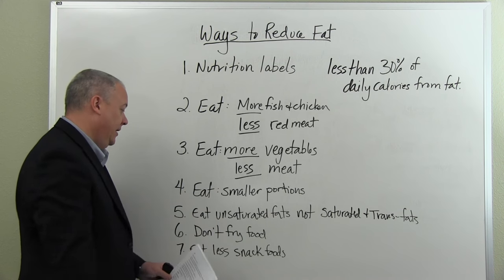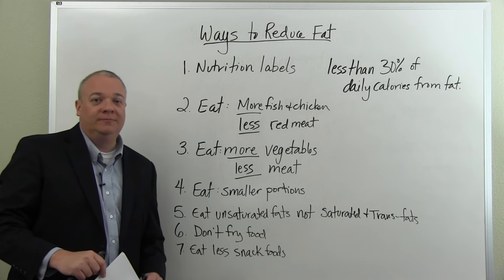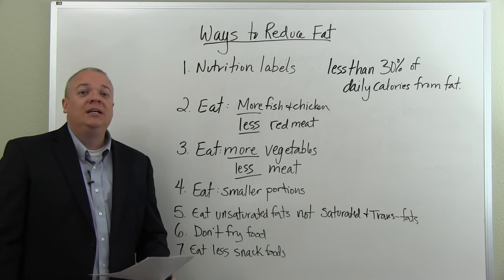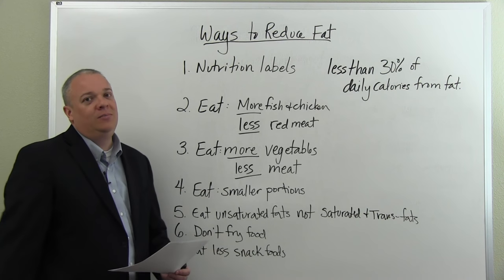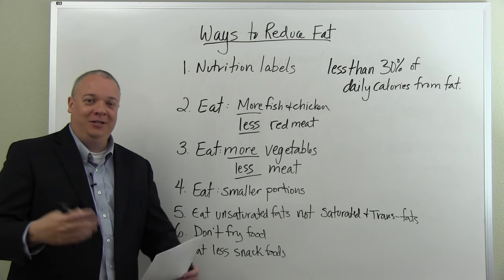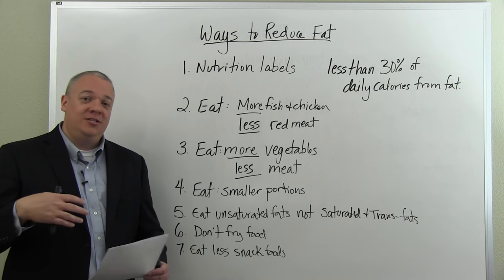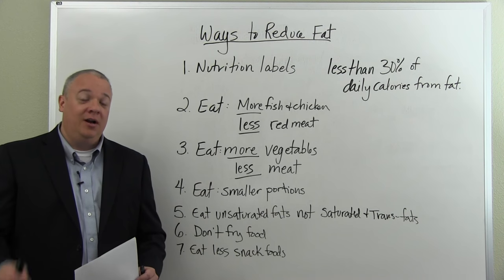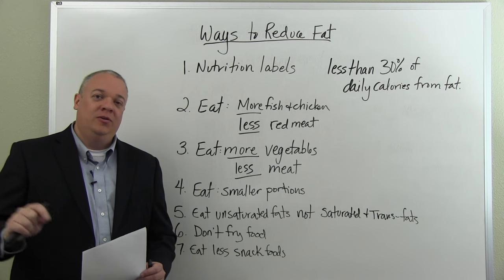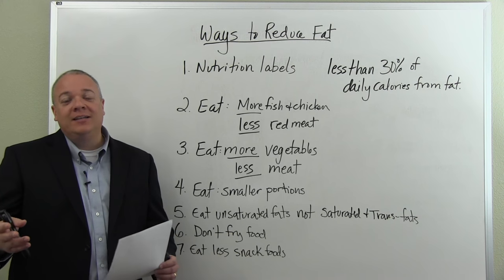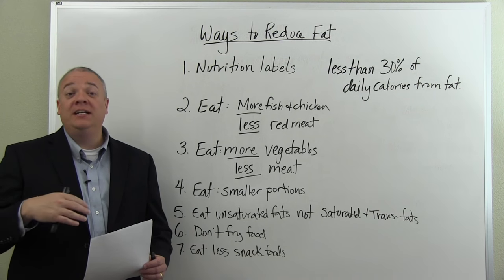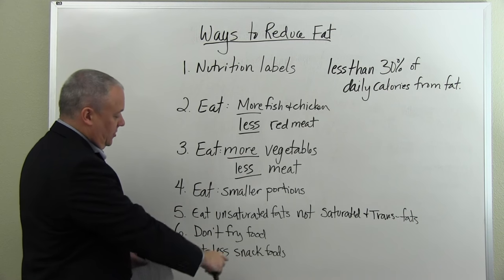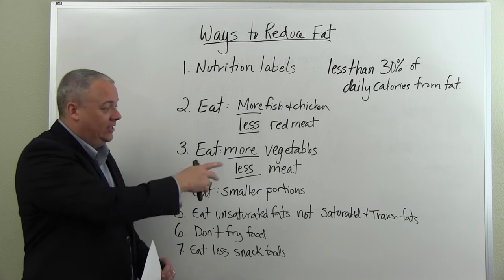Number six: in food preparation, encourage them not to fry food. Frying adds fat to the food, so find other ways that are just as tasty to prepare food without frying. Number seven: eat less snack foods. We're not saying snack less — we're saying eat fewer high-fat snack-type foods like potato chips and cookies. If you need a snack, eat an apple or some carrots. Snacking is okay, but choose more vegetables and fewer high-fat snack foods.